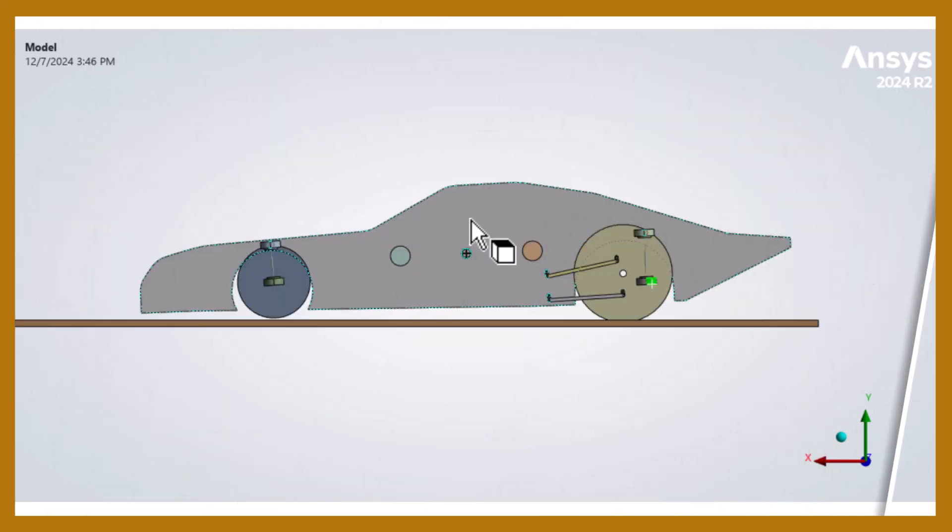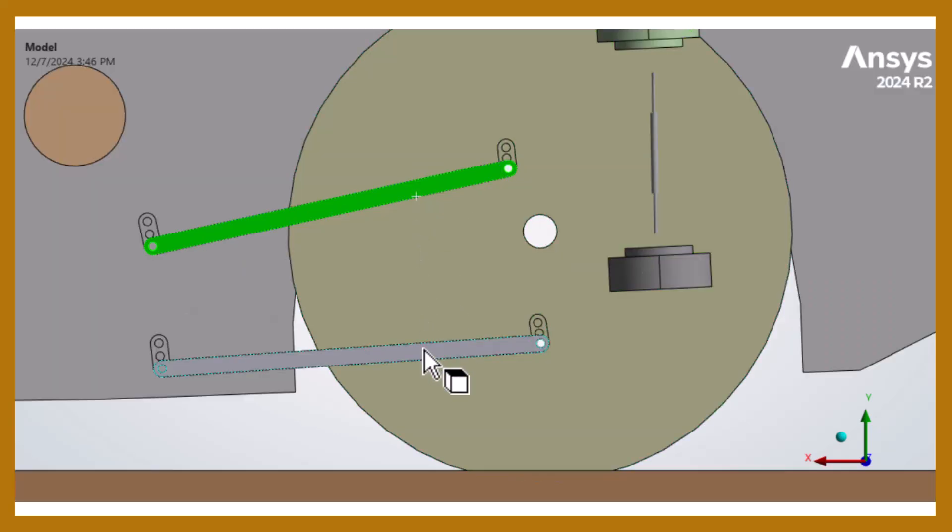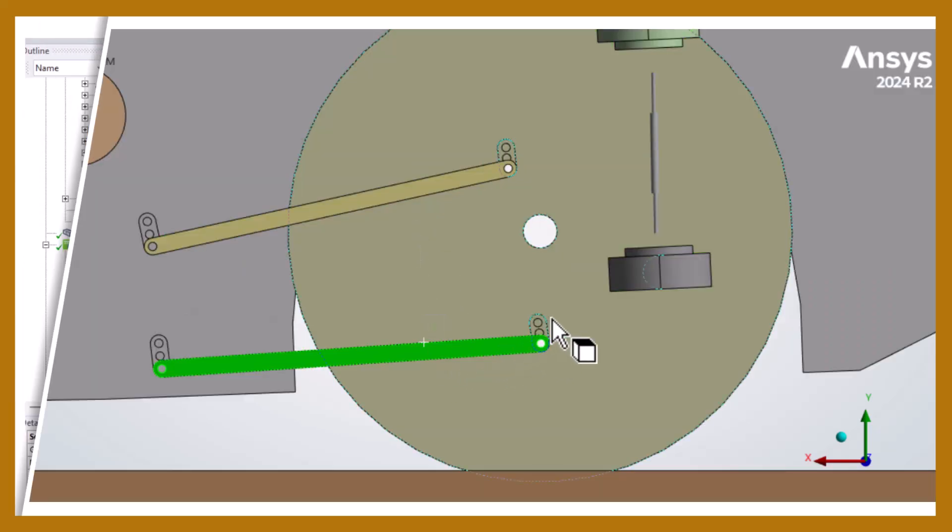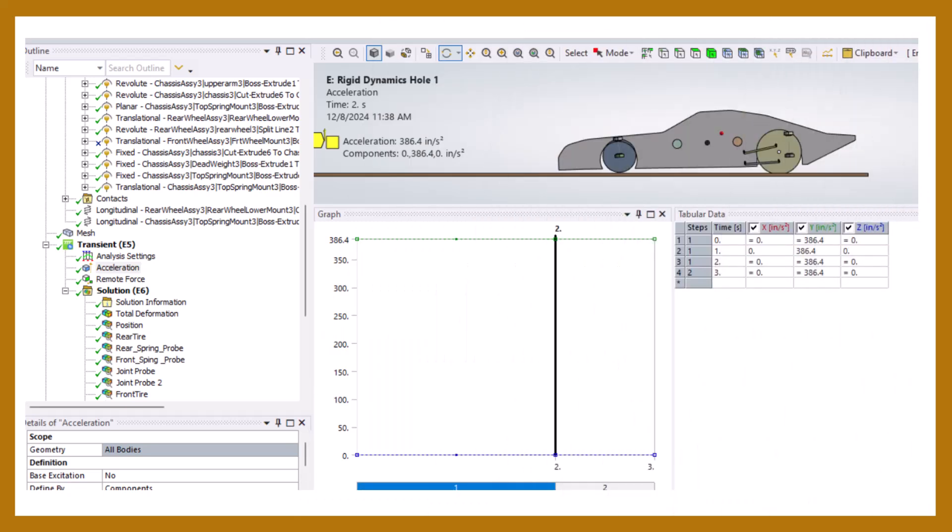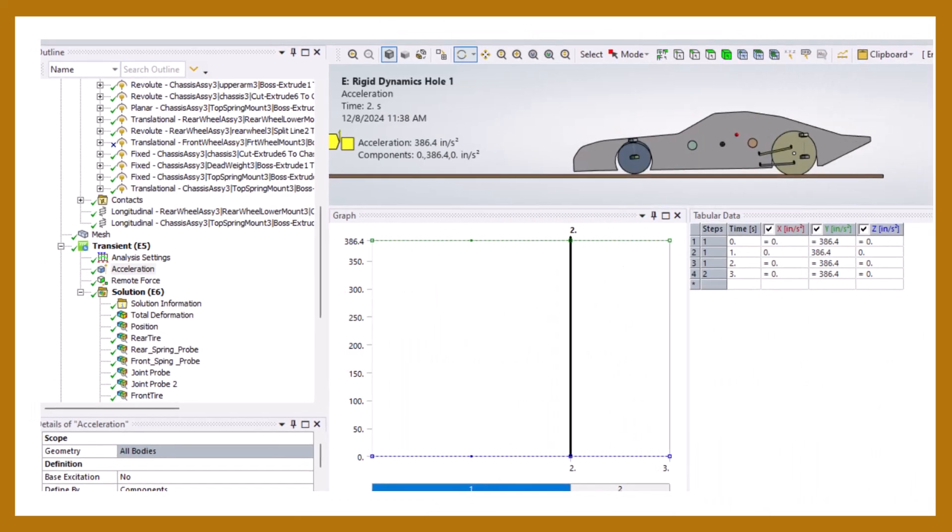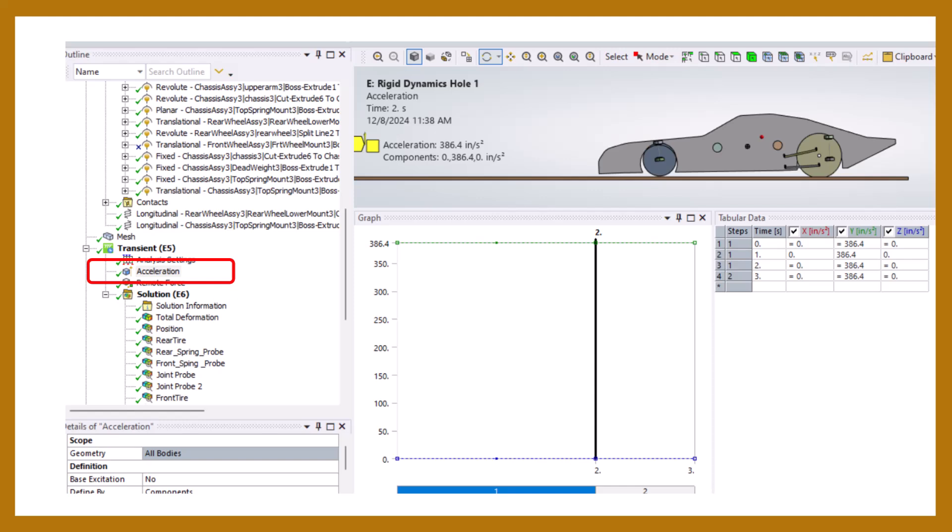Here's our half-car model with a section of track. The model includes the individual bodies with joints to make up the complete car. Gravity is applied with an acceleration of 386.4 inches per second per second. This is applied for 2 seconds before making the hit to allow the suspension to settle.